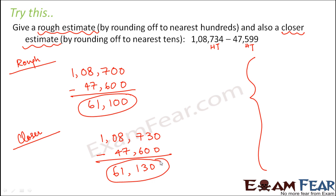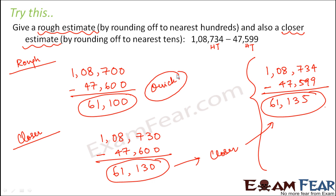Now let's prove that this is a closer estimate than this. So for that, let us find out the actual difference between the two. Now this is the actual difference. So obviously 61,130 is more closer to this as compared to 61,100, right? But this is more quick. This helps you to give a quicker estimate.